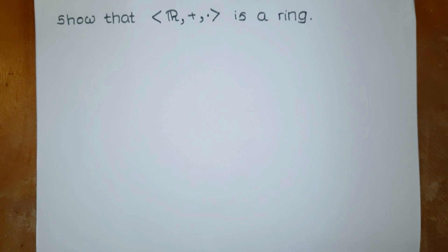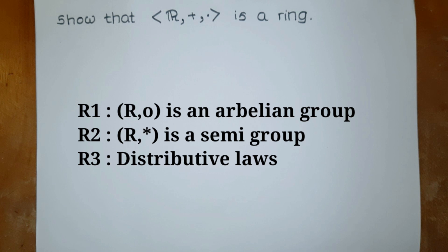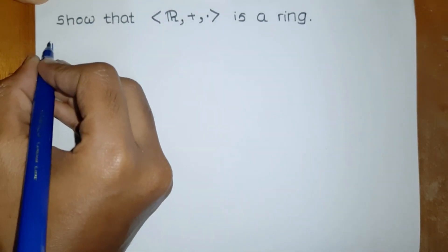For all elements of the given set, if the following conditions are satisfied, we call it a ring. We can divide these conditions into three parts: R1, R2, and R3. In the first part, R1, we show that R is an abelian group under the first operation. In R2, we show that R is a semigroup under the second operation. Then we consider the distributive laws: left distributive law and right distributive law.